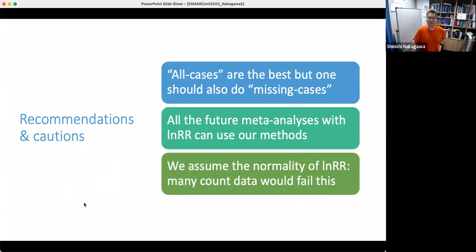So, conclusion: all cases method is the best one, but we should also probably run the missing cases as a sort of sensitivity analysis to see if you get consistent results. And what we can say, the biggest conclusion is all future meta-analyses can use our method because regardless of how complex or how simple your meta-analysis models are, you can use this method easily, because you only need to get a weighted average of CV, then you can plug it in.